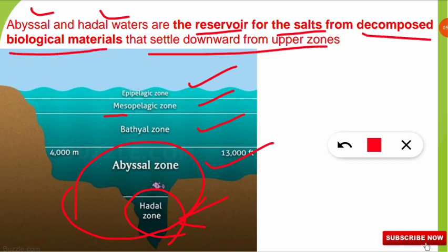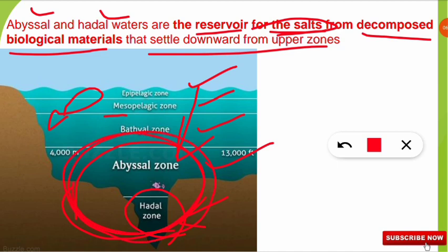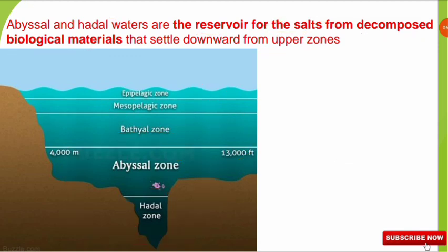What this means is that fish, organisms, zooplankton, and other organisms — when they die — move toward the bottom region of the ocean. During decomposition they release salts from their bodies, and these salts become concentrated in the abyssal zone and hadal zone. This is also an important fact to note down.